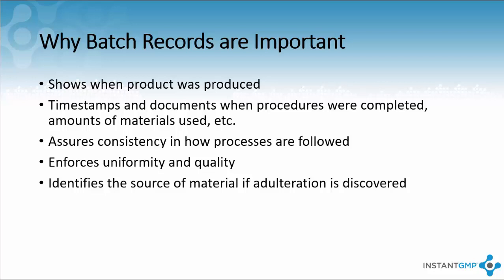BPRs also ensure uniformity from batch to batch. By laying out each step with the same limits, ranges, and checks and balances — with documented proof that these steps were completed correctly — you can say you are producing a quality product. This isn't to say an issue won't go wrong, but with strong supporting documentation, if an issue arises it will be easily identified by reviewing the production record.